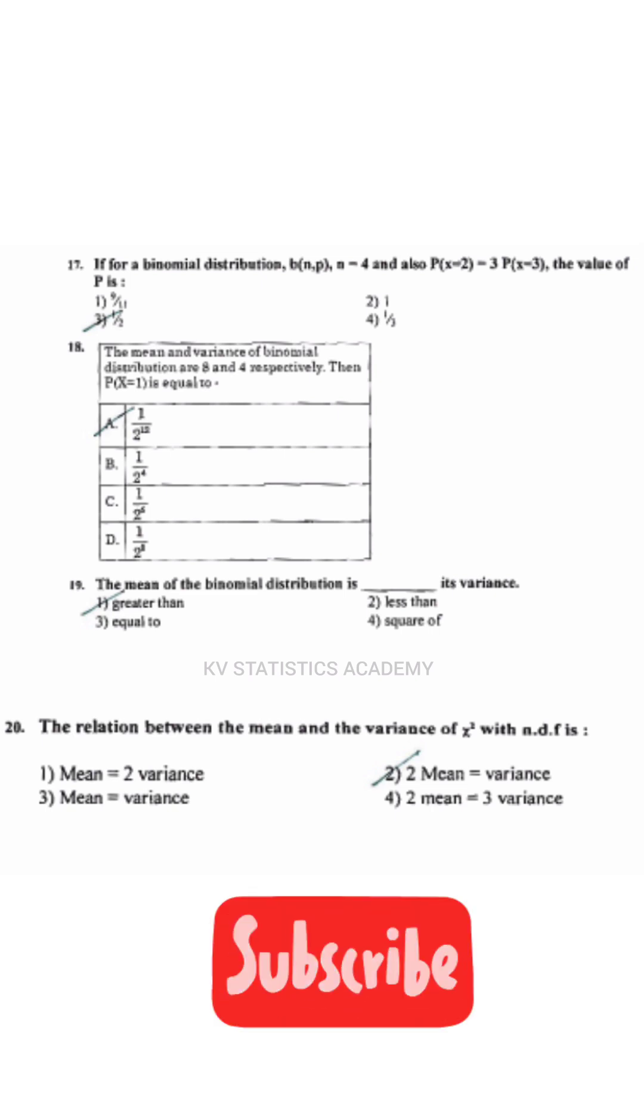The mean and variance of binomial distribution are 8 and 4 respectively. Then P(X=1) is equal to 1 by 2 to the power 12.